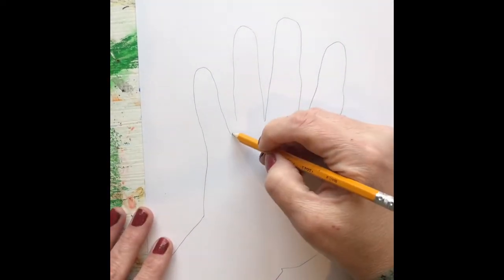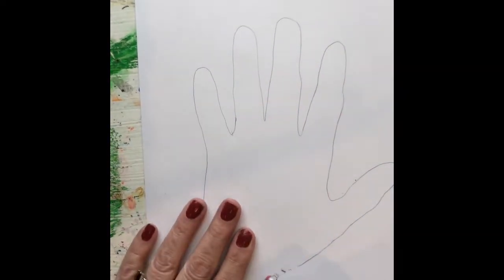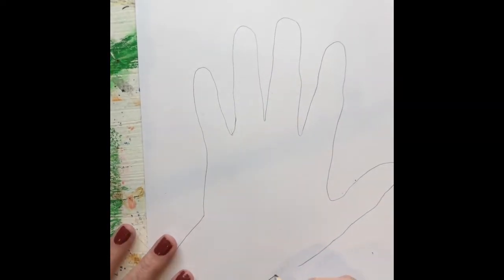And there are so many things you could do with that. So I have a little gap here. There we go. Okay. So there is a basic outline of my hand.